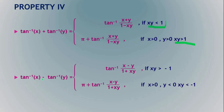For tan⁻¹(x) − tan⁻¹(y), the formula is the same but the signs change: where it was positive it becomes negative and vice versa, and the condition is xy > −1. When xy < −1, it becomes π + tan⁻¹ of the same formula. This tan⁻¹ addition formula is very important — you can also convert sin⁻¹ and cos⁻¹ into tan⁻¹ and then use it.